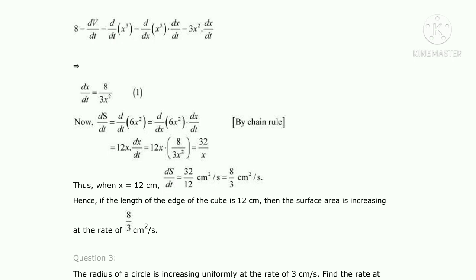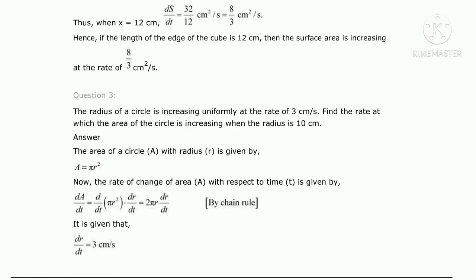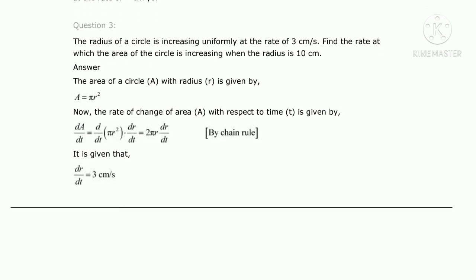Question three: the radius of a circle is increasing uniformly at the rate of 3 centimeter per second. We know dr/dt equals 3 centimeter per second. We have to find the rate at which the area of the circle is increasing when the radius is 10 centimeters.